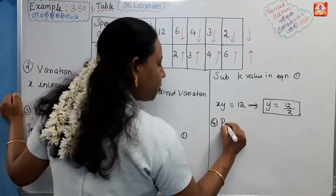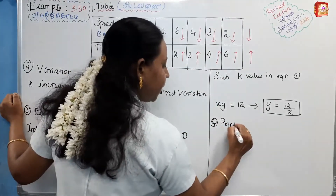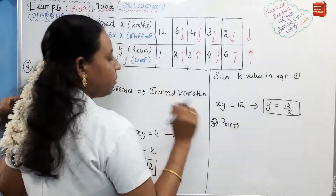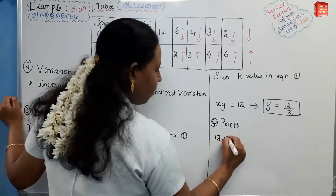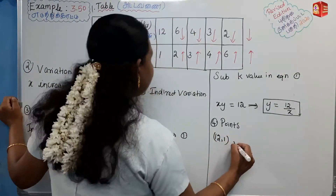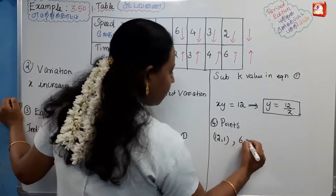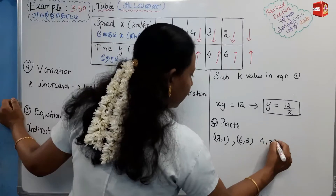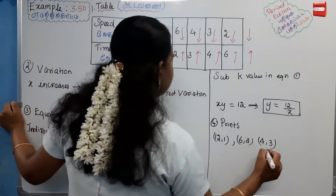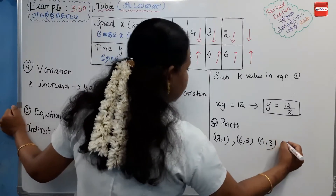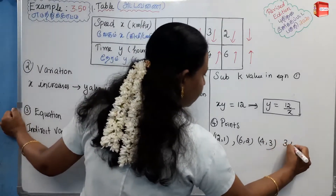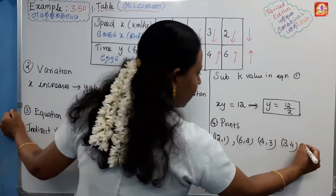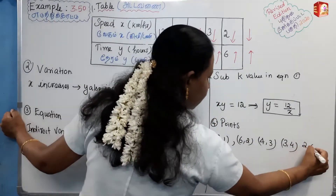The fourth step is to identify and list the data points to plot. The points are: first point (12, 1), second point (6, 2), third point (4, 3), fourth point (3, 4), and fifth point (2, 6). These five coordinate pairs will be plotted on the speed-time graph.